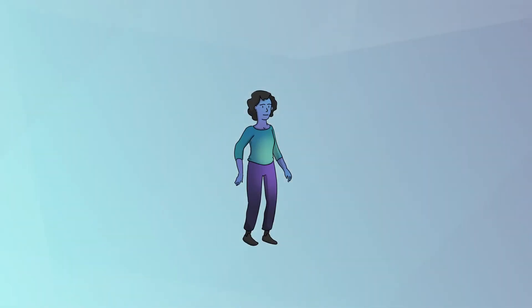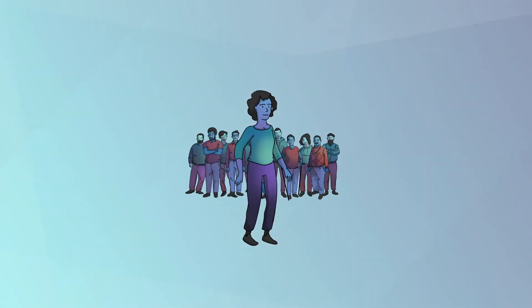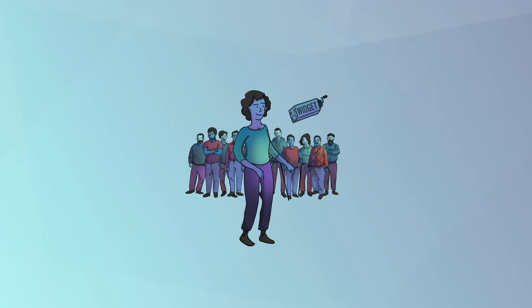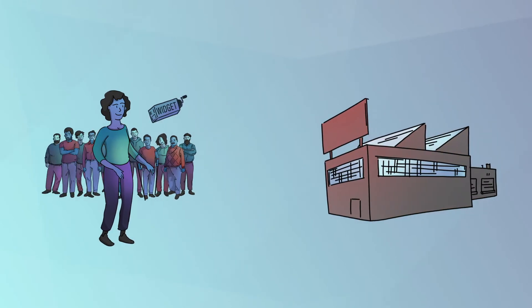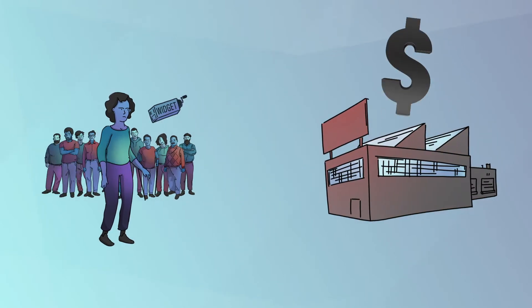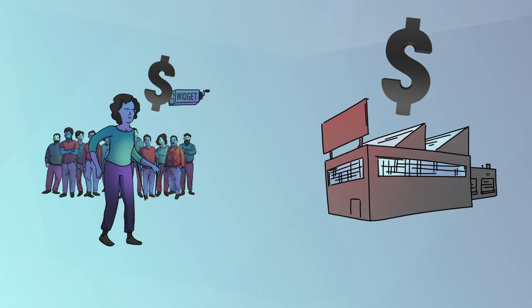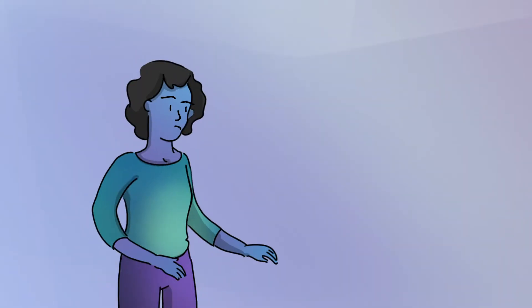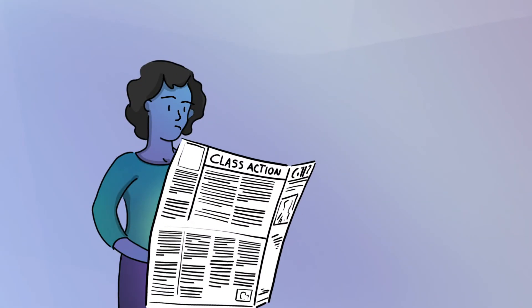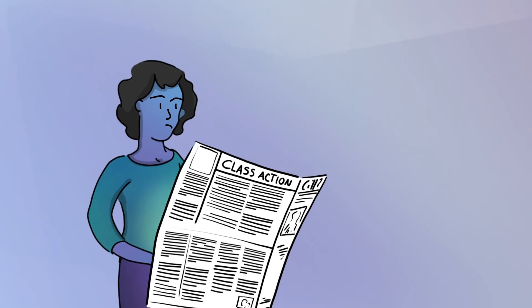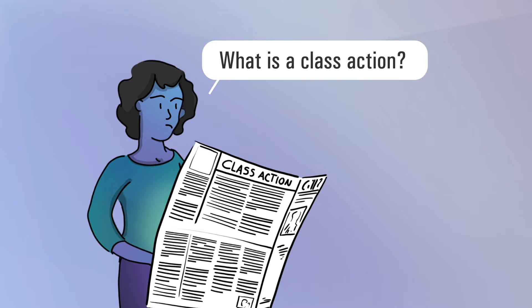This is Anita. Like many Canadians, Anita buys a lot of widgets. For the past few years, widget-making companies illegally fixed the prices of their products. As a result, Anita and thousands of others paid too much. Anita wants her money back. Last week, Anita read that a class action had been started against the widget-making companies. Anita wants to know: what is a class action?